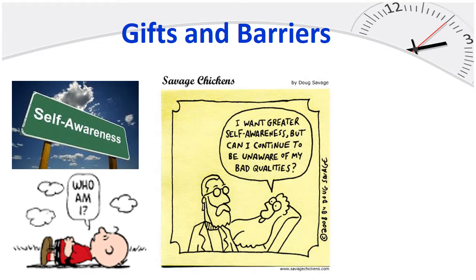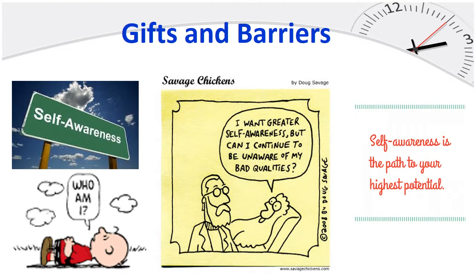As in this cartoon: "I want greater self-awareness, but can I continue to be unaware of my bad qualities?" In order to do this, you should write a plan of action to support the outcome priorities for your gifts and barriers. Review the plan from time to time. Keep a journal to remind you of what you have done and where you plan to be. Self-awareness is the path to your highest potential.